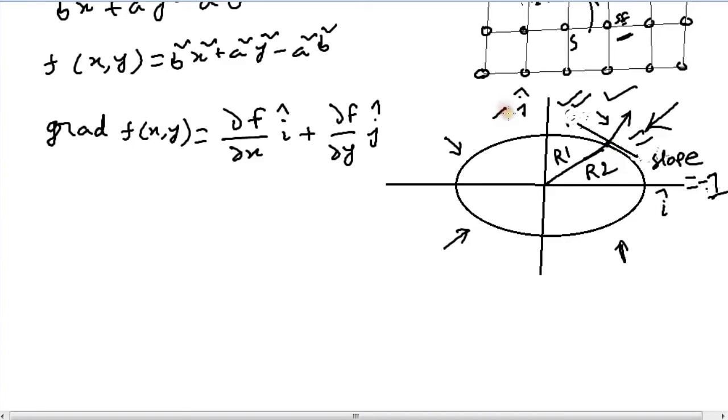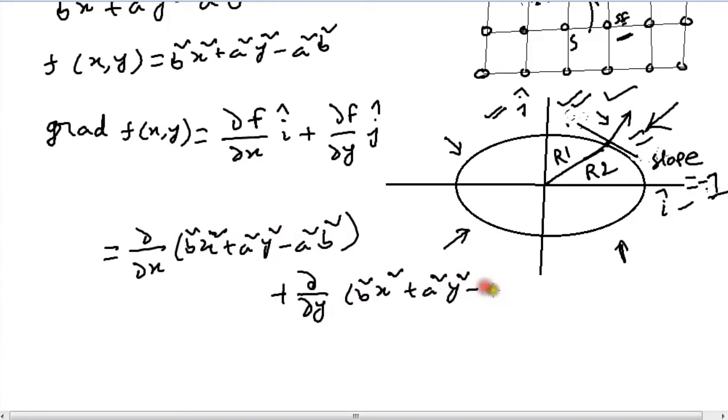So first, let's find the partial differentiation. That's ∂/∂x(b²x² + a²y² - a²b²)î + ∂/∂y(b²x² + a²y² - a²b²)ĵ, and that gives you 2b²xî + 2a²yĵ.